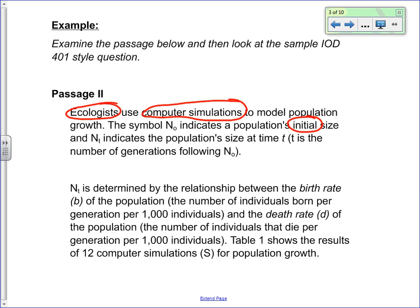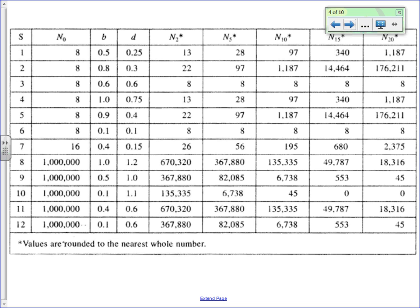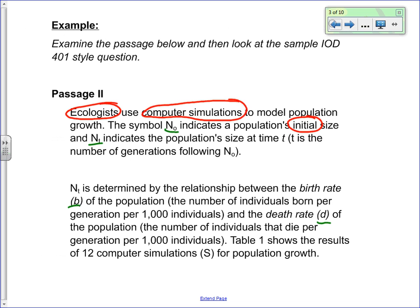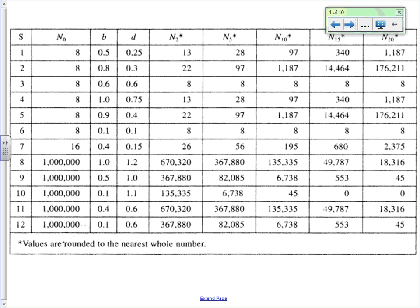So let's flip to the passage. We're expecting to find the variable NT, the variable N0, and the variables B and D. Looking at the table, we see all of those listed. We're also looking for the variable S. S represents which simulation we're looking at — there's no real order to which simulation they ran, just which one they did. There are 12 computer simulations total.